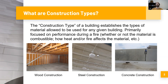Think about these different types of materials and how they typically respond to a fire. For example, wood construction is obviously more susceptible to fire damage and danger than a steel building or a concrete building. The way that these materials are used is governed by the construction type of the building.